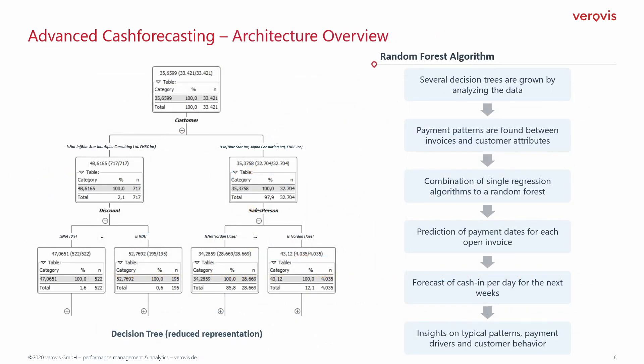But what happens inside of our random forest regressor? Several hundred decision trees are built up to identify payment patterns based on past invoices and payment behaviors. All these decision trees are combined to one powerful random forest regressor. This ensemble of algorithms predicts the date at which each open invoice is likely to be paid using the identified patterns. Based on these predictions, a forecast of expected cash-in per day is estimated for the next weeks, as well as worst and best-case scenarios. Additionally, insights on typical payment patterns, payment drivers, and customer behavior are identified and visualized in our dashboard.